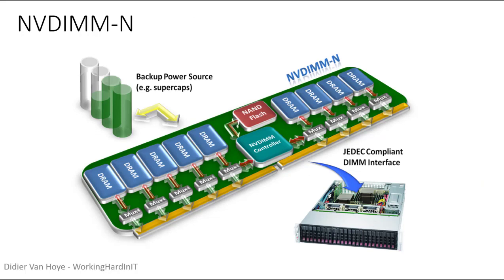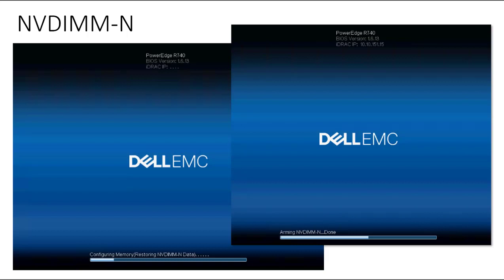How does NV-DIMM N work? Everything is happening in RAM. The moment you shut down the server, have a crash due to a blue screen, or lose power, the battery pack saves all the data from memory into the NAND flash. When you boot, all that data has to be reloaded — you can actually see this happening as the server arms the NV-DIMM and restores the memory.